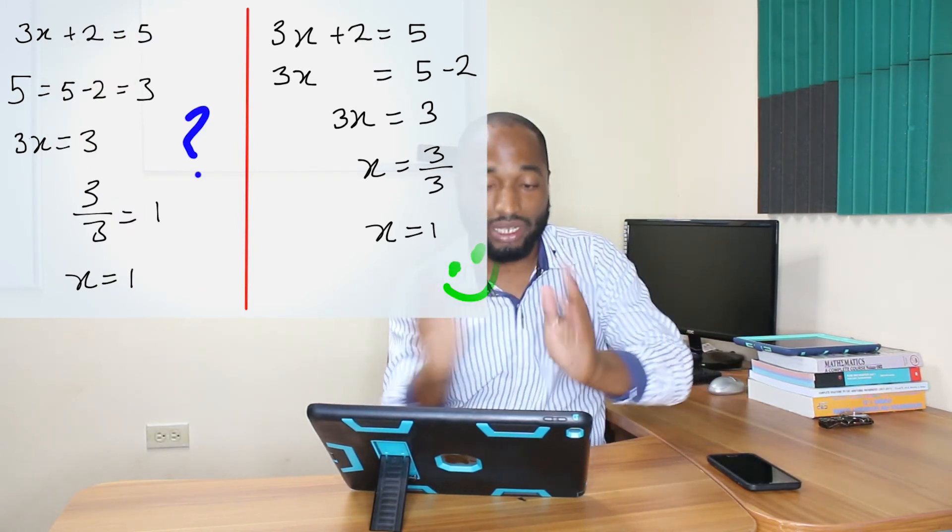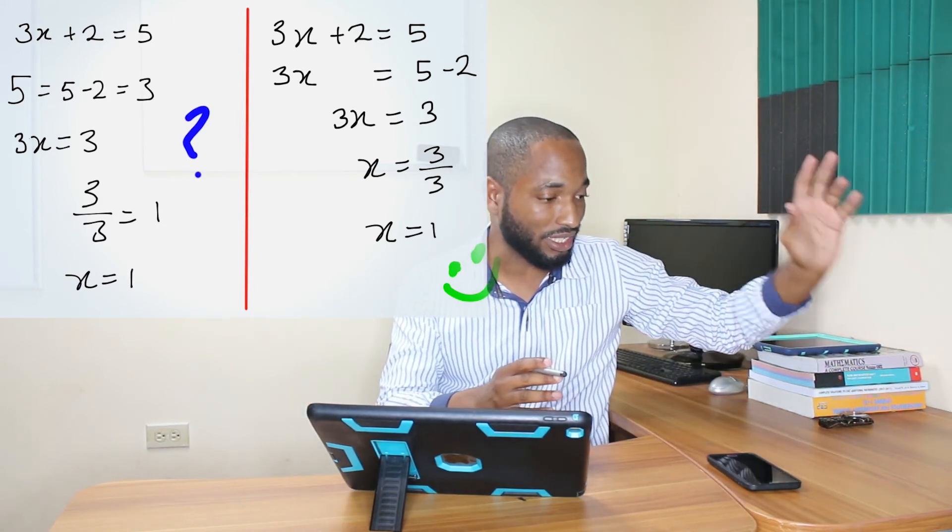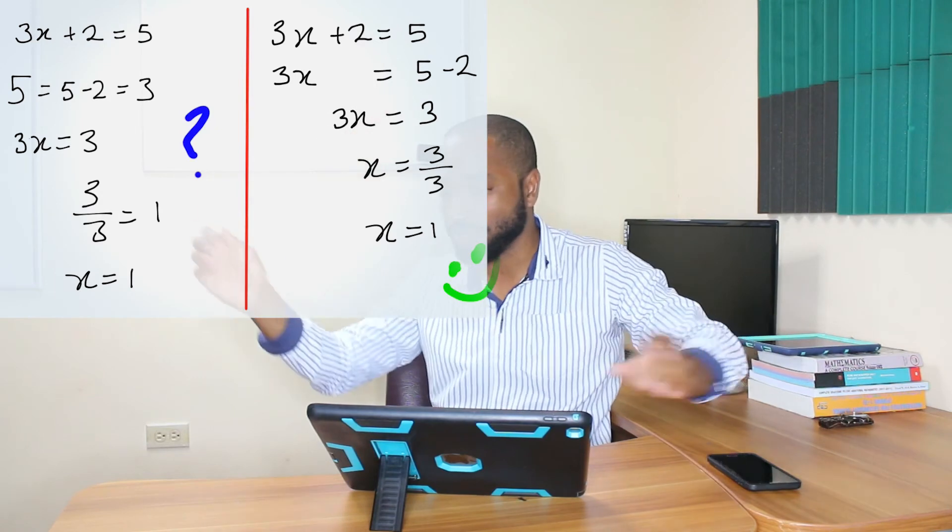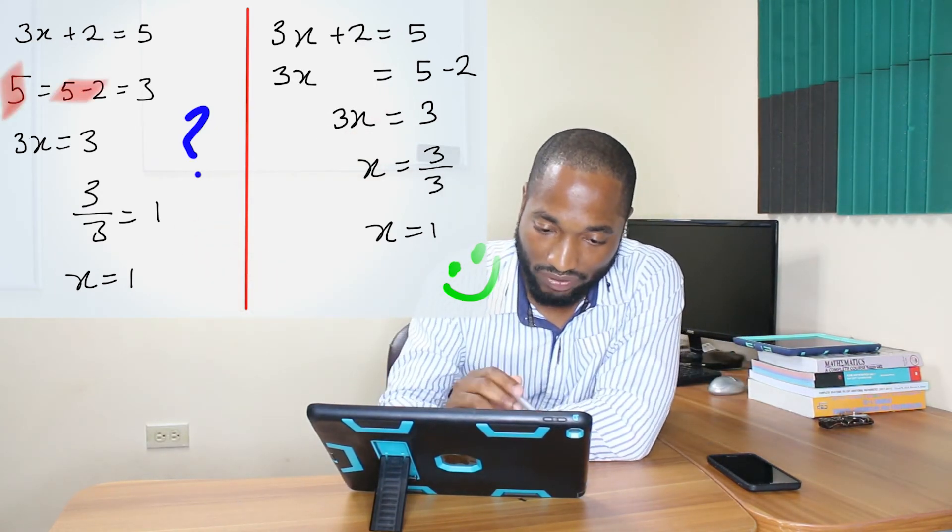The next problem is you can't just throw equal signs all over the place. Equal signs mean what is in front of the equal sign is equal to what is behind the equal sign. Is 5 equal to 5 minus 2? Is 5 equal to 3? No.